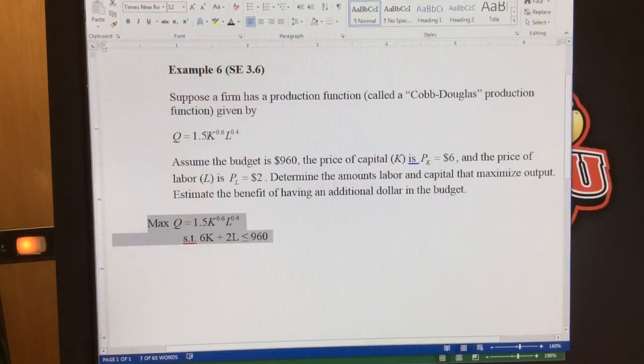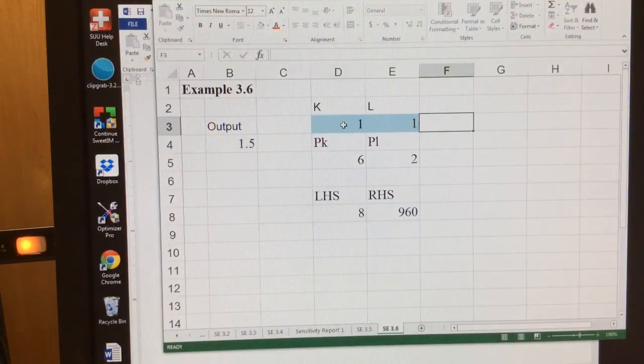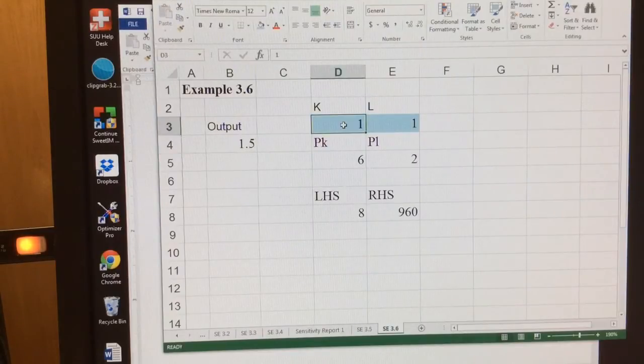So if I spend all my money on machines, I don't actually hire anyone to work on the machines, therefore I can't produce anything. So what we want to do is just put in one and one for capital and labor. You see our output. What if we built two machines? You see our output increases.